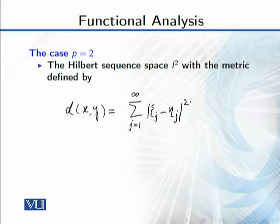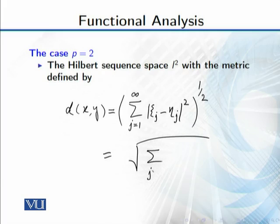That means this is just a square root of summation j from 1 to infinity |η_j - ξ_j|^2, the square root. With this distance function you have a metric space defined.